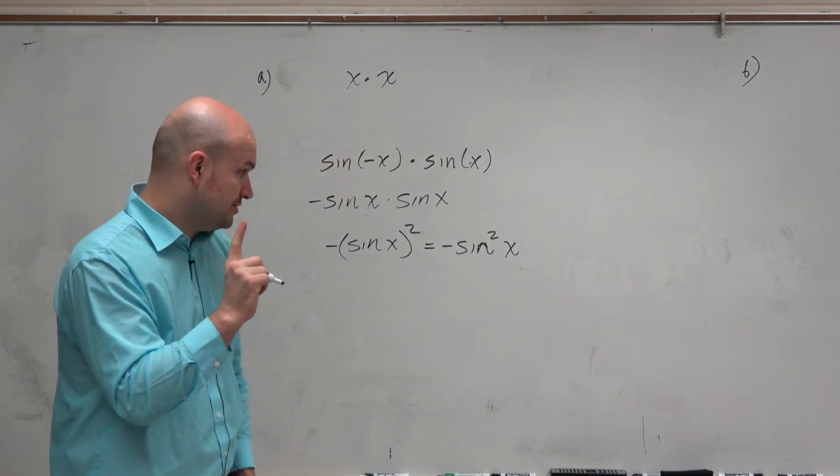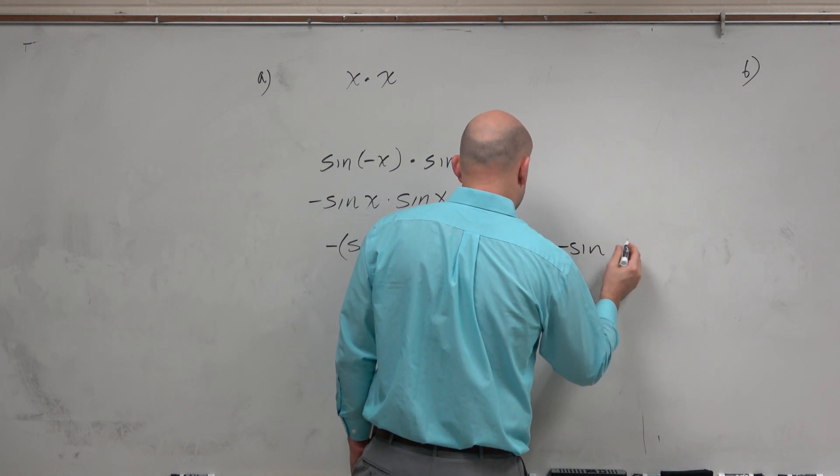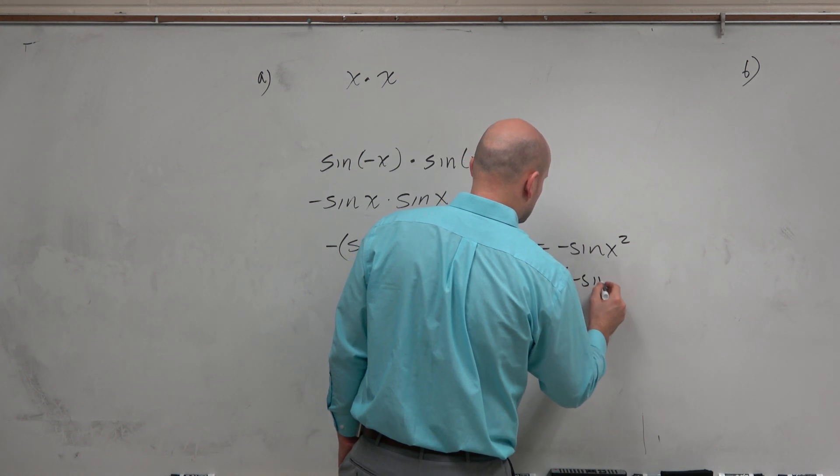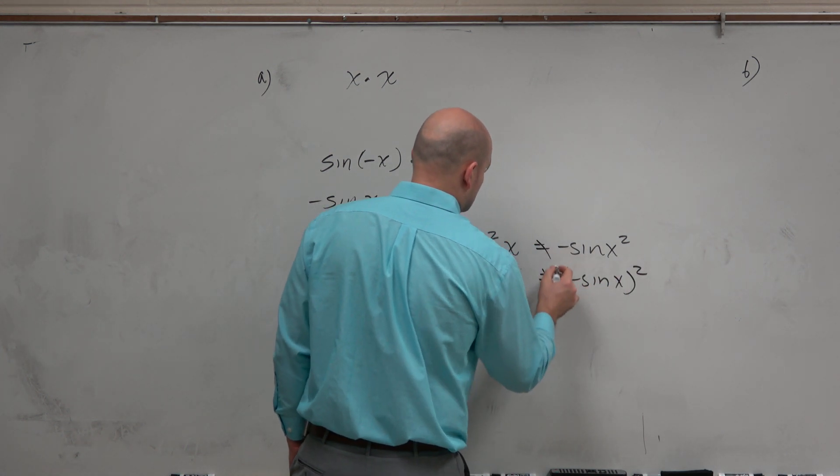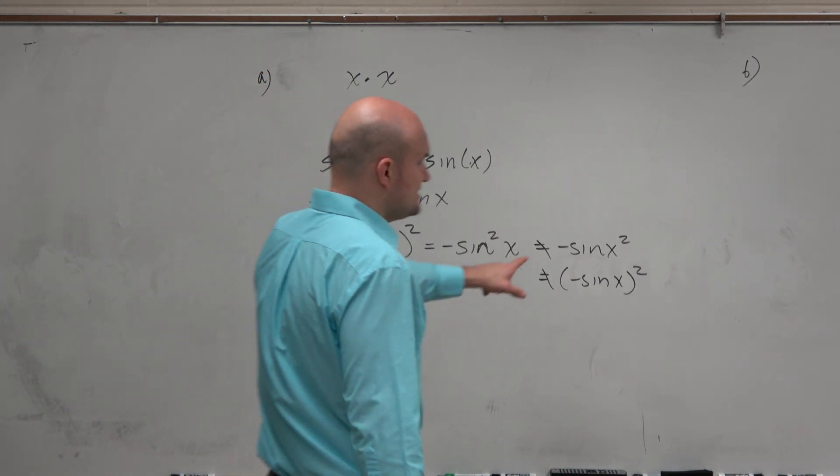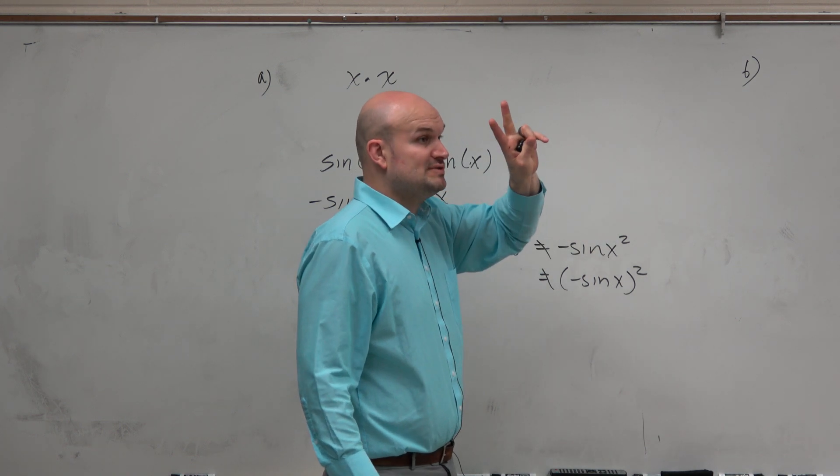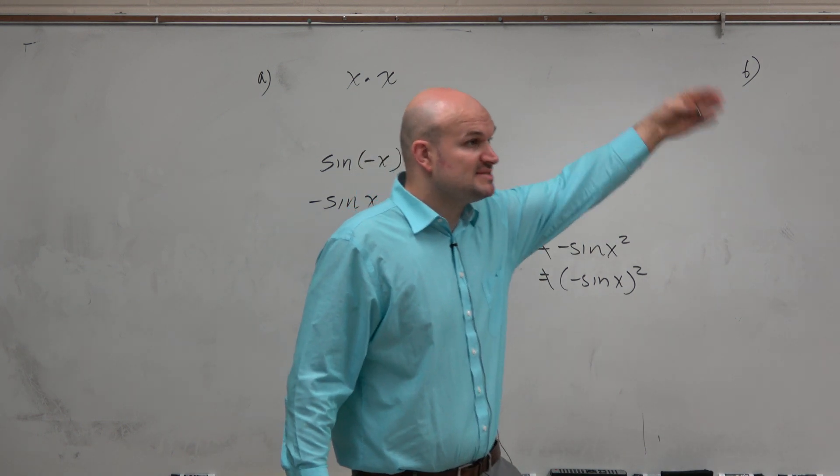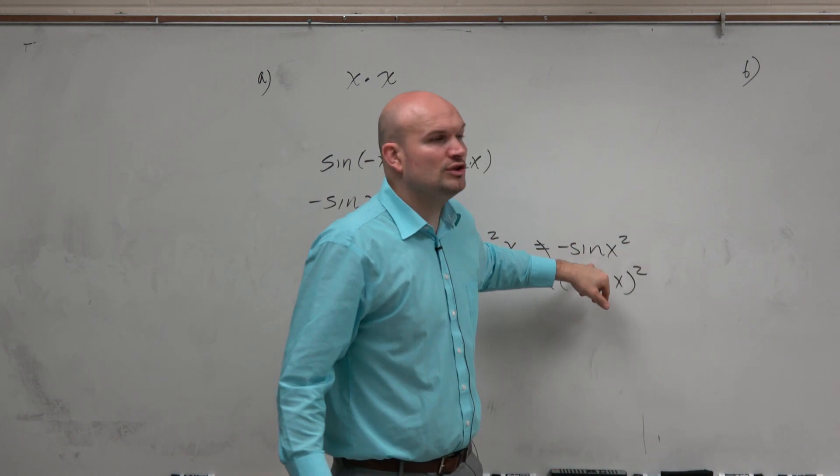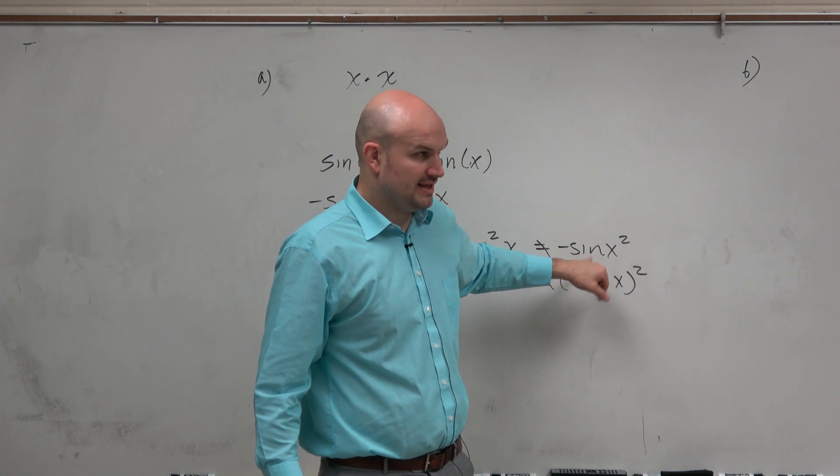The one thing I don't want you to do—do not do this, or do this. Couple things that are wrong with this example. Here, you're not squaring the sine function. There's two sines: sine of x times sine of x being multiplied by itself. When you write it this way, you're only squaring the angle. That doesn't work. That's not the same.